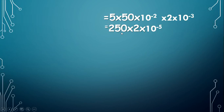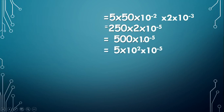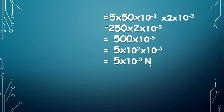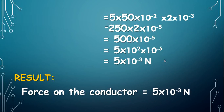So we get 250 into 2 into 10 power minus 5. When we multiply 250 and 2 we get 500 into 10 power minus 5. We split 500 and write 5 into 10 power 2 into 10 power minus 5, giving 5 into 10 power minus 3 Newton. Therefore F is equal to 5 into 10 power minus 3 Newton. Result: force on the conductor is equal to 5 into 10 power minus 3 Newton.